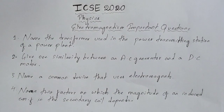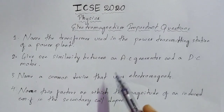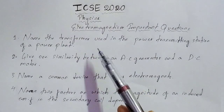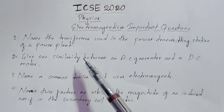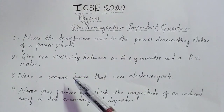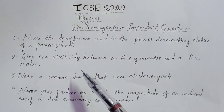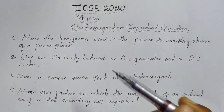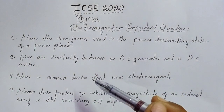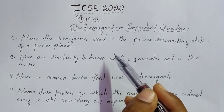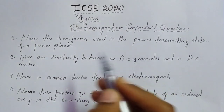Hi guys, this is Barsha in your Ching Mastermind. In this session we are going to discuss the important questions of physics from the chapter electromagnetism. All these questions are important for your ICSE 2020 board examinations, so please go through all these questions carefully. These are the types of questions mostly asked in board examinations from electromagnetism, and it is also going to be a kind of revision for you all since you are getting only one day gap before your physics board examination.